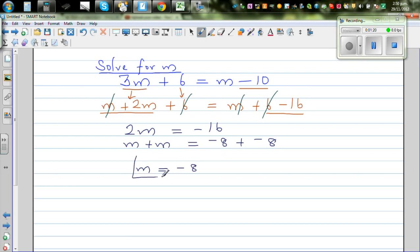It's always a good habit to check your answer. If you write 3m plus 6, that's 3 times negative 8 plus 6. You'd always multiply first, so this is negative 24 plus 6, which is negative 18.